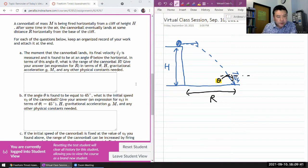In terms of this angle theta, what is the range of the cannonball R? Give your answer in terms of theta, H, gravitational acceleration G, M, and any other physical constants needed. So when you look at this statement, it should have you scratching your head because they didn't give you the initial velocity. If they gave you initial velocity, this would be a really easy question to answer.